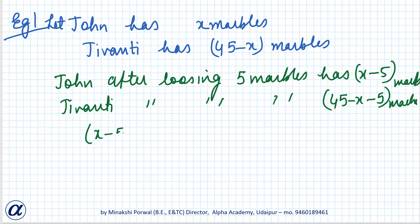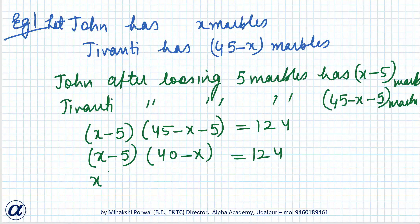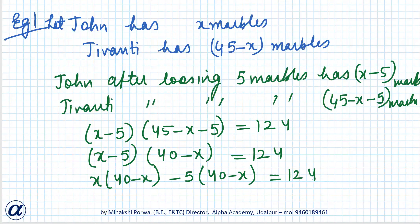So the equation is: (x minus 5) into (45 minus x minus 5) equals 124. Simplifying: (x minus 5) into (40 minus x) equals 124. Expanding: x into (40 minus x) minus 5 into (40 minus x) equals 124, giving us 40x minus x² minus 200 plus 5x equals 124. We will frame the equation.